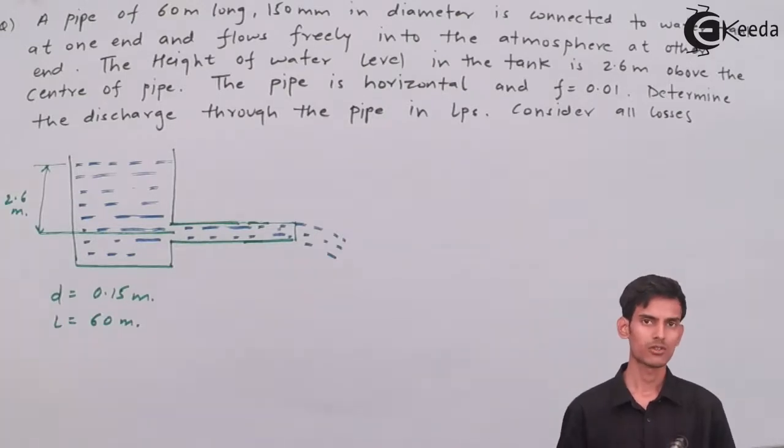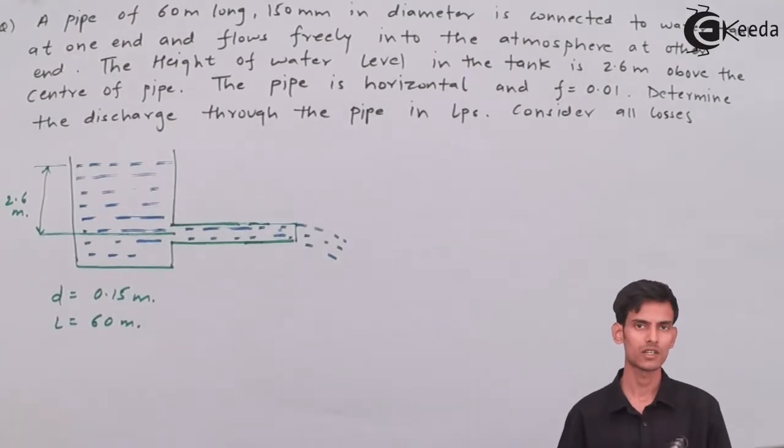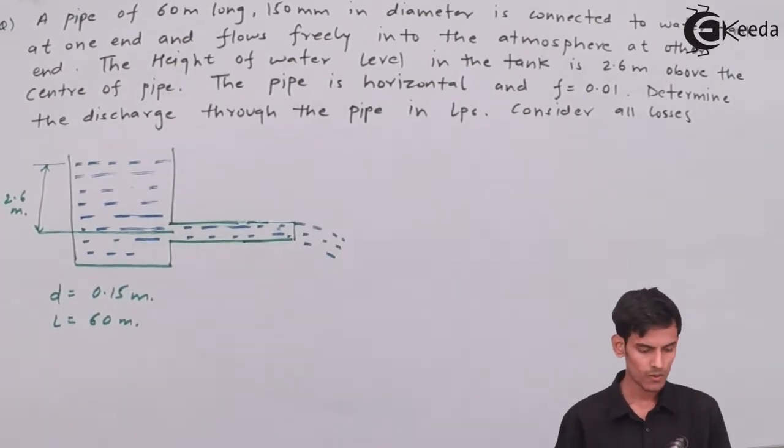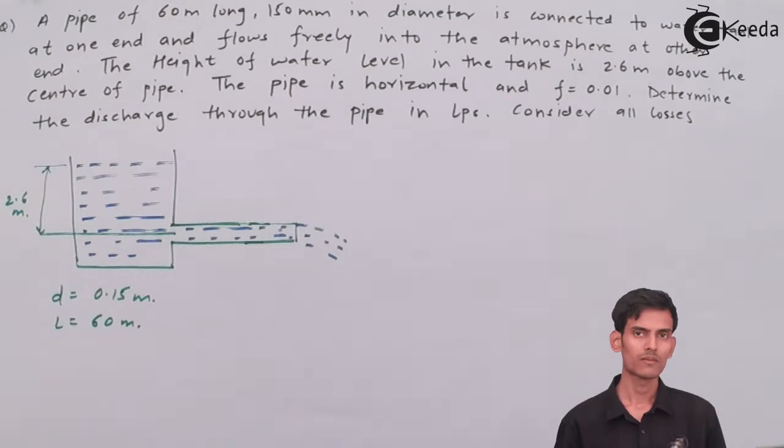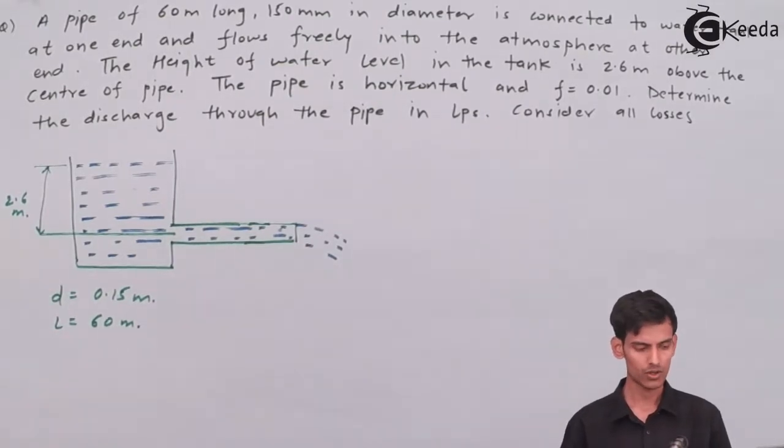We need to account for all types of losses. Let's see what different losses will be happening here. When the water enters the pipe from the reservoir, there will be entrance loss. Next, when the water flows through the pipe, there will be loss due to friction. Third, there will be loss due to exit. These three types of losses we need to account for, and once we get the total loss, we'll get the velocity and then the discharge.